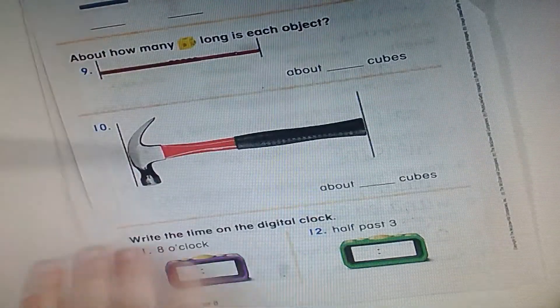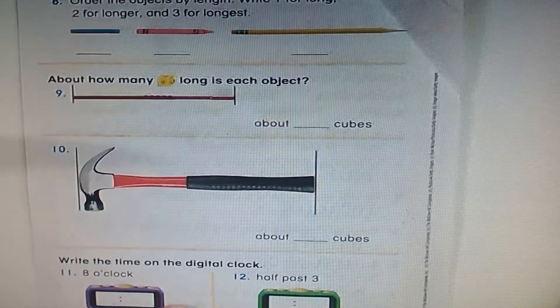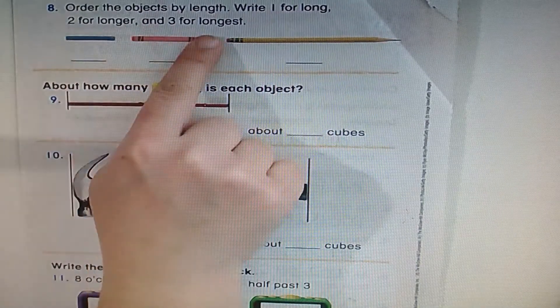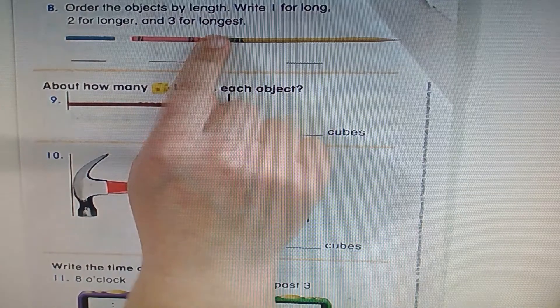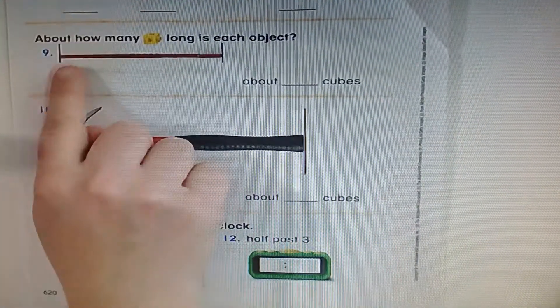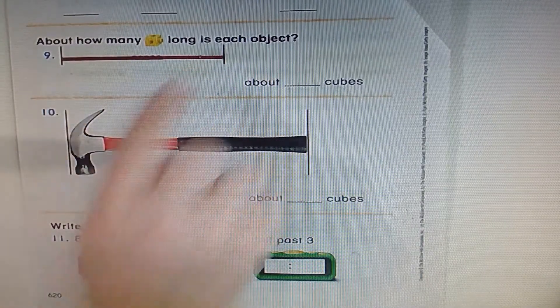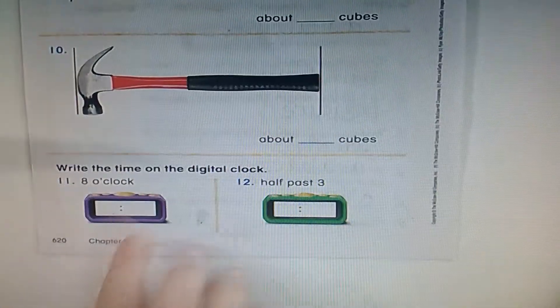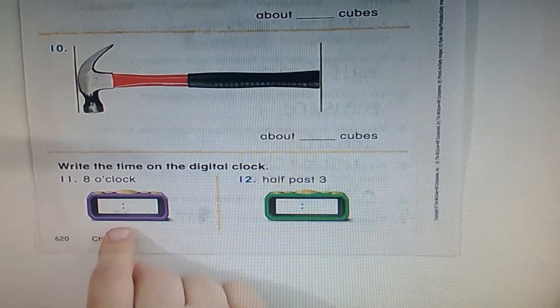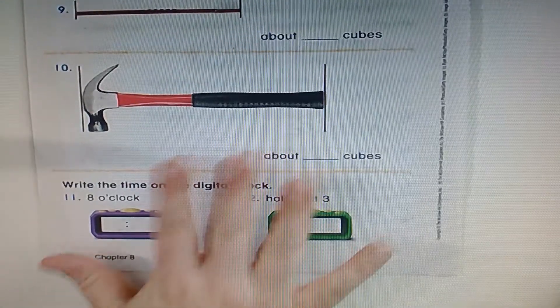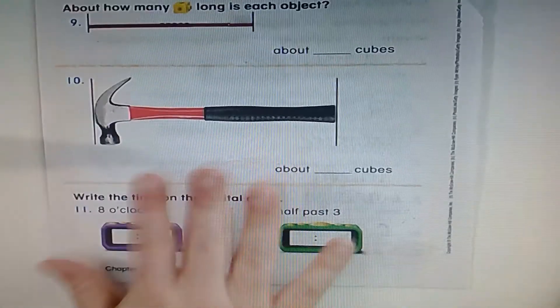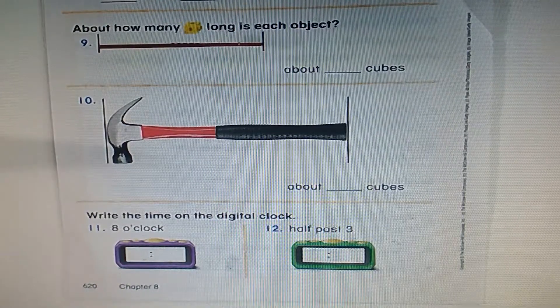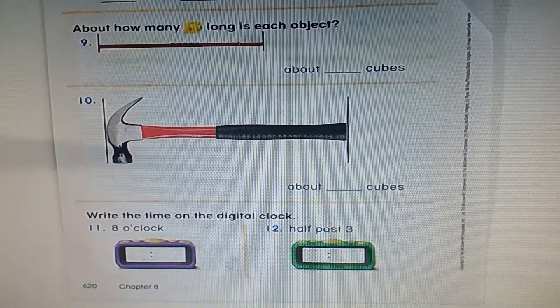For independent work today, I want you to do this side on your own. We're going to order the objects by length. Write one for long, two for longer, and three for the longest. Another way to say this would be write three for the longest and one for the shortest. Then use your paper clips to measure about how long these are. Now I know this one says cubes, but we're using clips. So you do those on your own. And then it wants you to write the time on these digital clocks here. Eight o'clock and half past three. Take a picture of this one if you want to now or you can do it on Friday. This is one of the things that's due on Friday. Make sure that you double check the email for any additional work in math. And that's it today, guys. Excellent work.